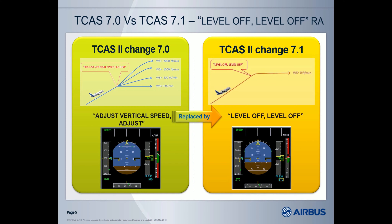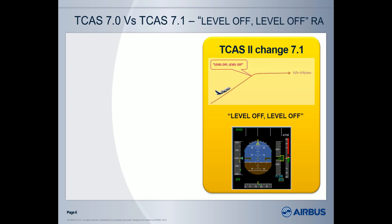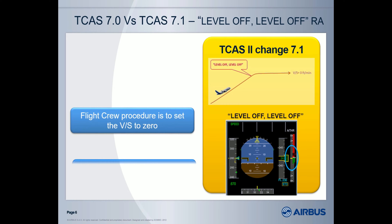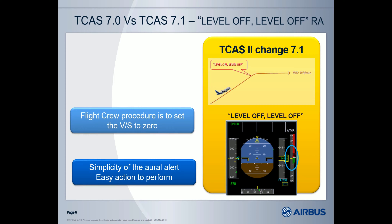Therefore, with the TICAS Change 7.1, we have changed this call-out and replaced it with 'level-off, level-off.' All other call-outs remain the same between these two standards. So when this RA is triggered, the pilots must level off, meaning they must reduce the vertical speed to 0 feet per minute. This modification ensures a better understanding of the oral alert and a better understanding of what action is required. Of course, this standard provides other enhancements, which are documented in Airbus World. This one is the most visible for flight crews.